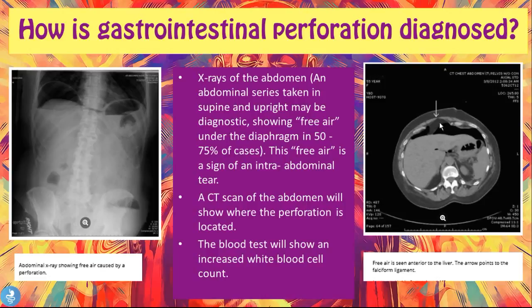A CT scan of the abdomen will also show where the perforation is located. On the CT, you can see the free air and how far the organs are from the abdominal wall — that whole space filled with air is the free air sign seen anterior to the liver. The arrow points to the falciform ligament, showing the liver is still attached to the anterior abdominal wall, but you can notice the amount of air lying between the abdominal viscera and the abdominal wall. A blood test will also show an increased white blood cell count.